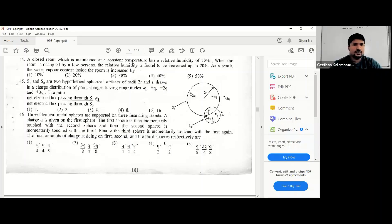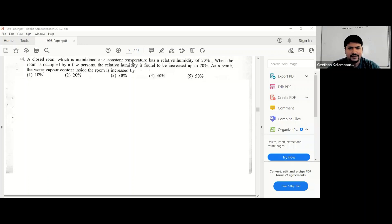A closed room which is maintained at a constant temperature has relative humidity 50%. When the room is occupied with few persons, the relative humidity is found to be increased up to 70%. As a result, the water vapor content inside the room is increased by how much?